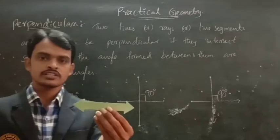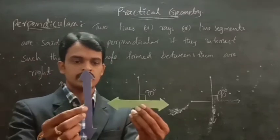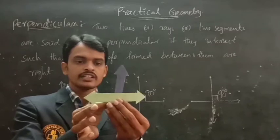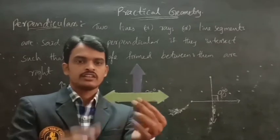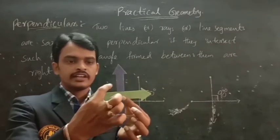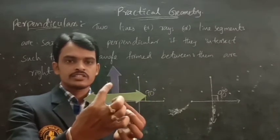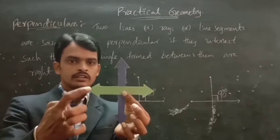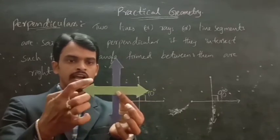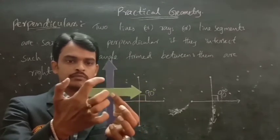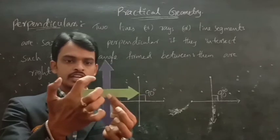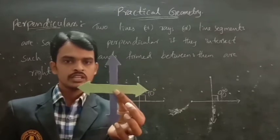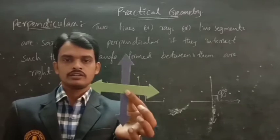See, look at here. This is a line and this is another line. If these two lines intersect at right angles, if they are intersected, then the angle formed between them is 90 degrees — then these are perpendiculars.